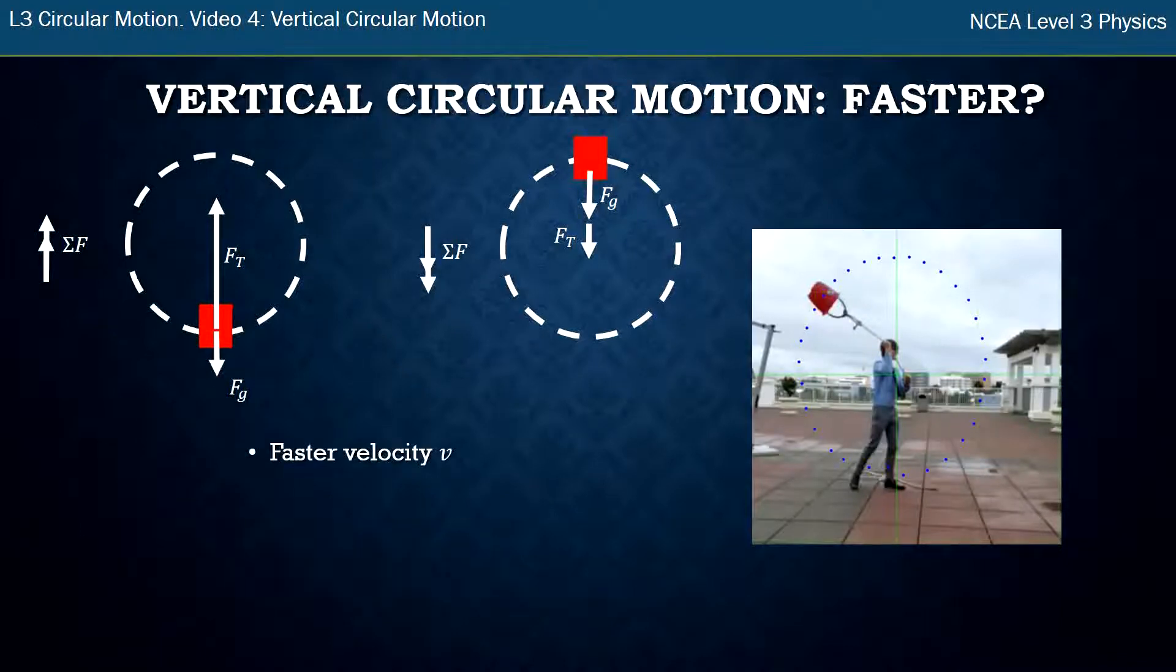So now let's look at it if we're still going at a constant speed but a faster constant speed. If it's going at a faster velocity we know the total force in circular motion is always given by this mv² over r. Larger v means we're going to have a larger total force.